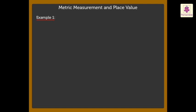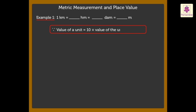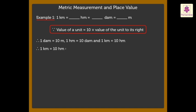Let's find the relation between kilometre, hectometre, decameter, and metre. We know that the value of a unit is ten times the value of the unit to its right. Therefore, one decameter is equal to ten metres, one hectometre is equal to ten decameters, and one kilometre is equal to ten hectometres. So, one kilometre equals ten hectometres equals one hundred decameters.